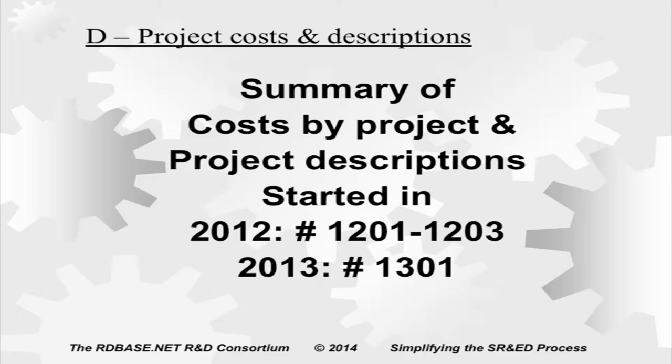If you use this numbering system, it's quick to see not only whether a project is new or old, but also how long it's been going. When it goes beyond three years, that's where the CRA says: is this really a project or a program, and asks you to justify it.